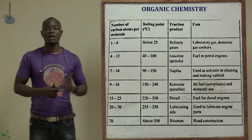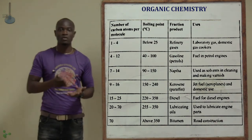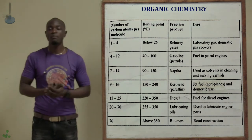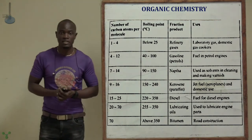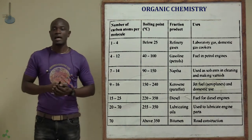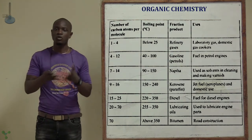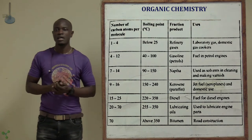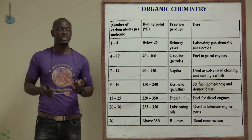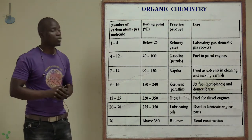Petrol falls between carbon numbers 4 to 12, with an average boiling point of about 75 degrees Celsius. Carbon atoms from about 7 to 14 have boiling points of 90 to 140 degrees Celsius, and they are mostly used as solvents for cleaning, making varnishes, and cleaning windows.